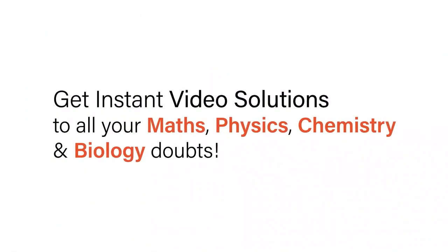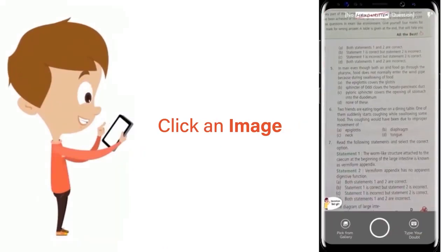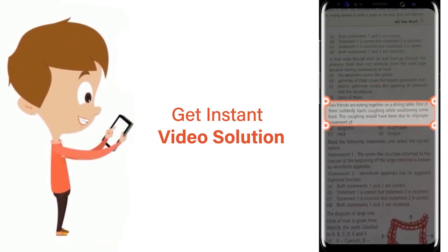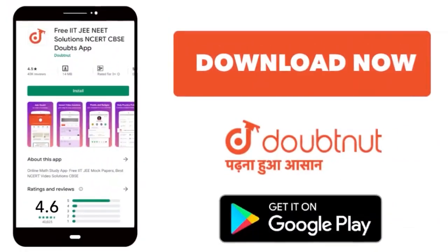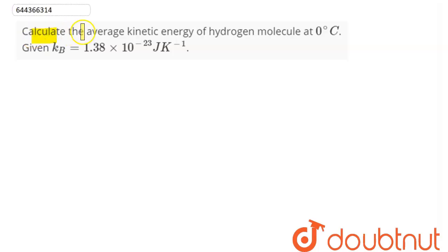With Doubtnut, get instant video solutions to all your maths, physics, chemistry, and biology doubts. Just click the image of the question, crop the question, and get an instant video solution. Download Doubtnut app today. The question is: calculate the average kinetic energy of hydrogen molecule at 0 degree Celsius. Given Boltzmann constant as 1.38 into 10 power minus 23 joule per kelvin.